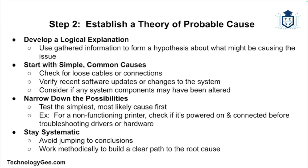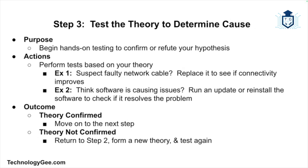Once you've identified the problem, it's time to establish a theory of probable cause. Based on the information gathered, develop a logical explanation for what might be causing the issue. Start with the simple stuff — common causes like loose cables, faulty software updates, or recent system changes. Narrow down the possibilities by testing the simplest or most likely theory first. For example, if a printer isn't working, check whether it's turned on and connected before investigating driver issues.